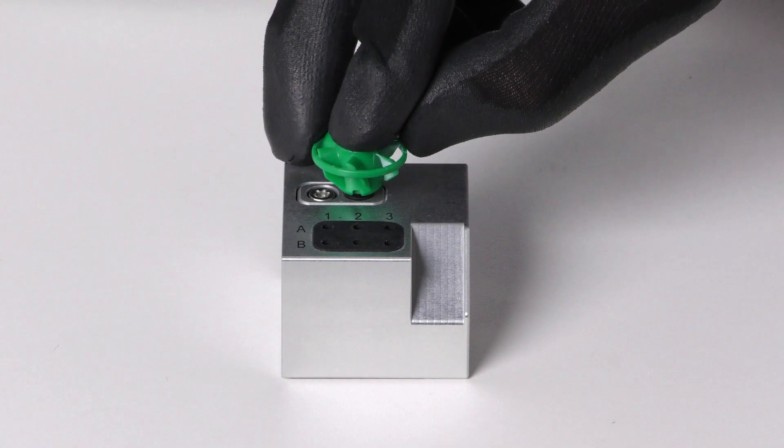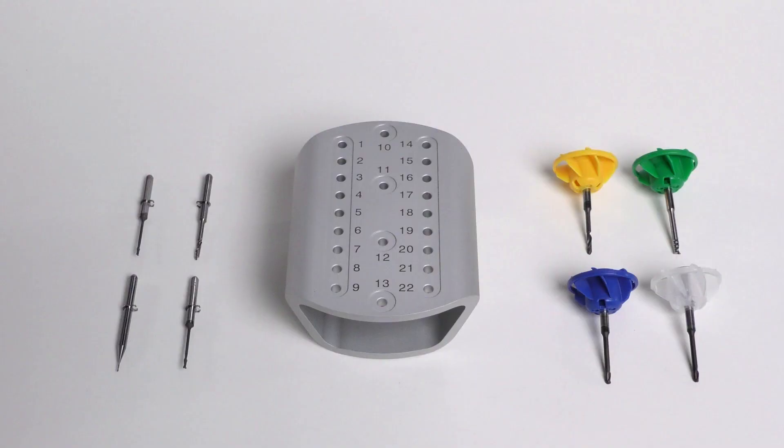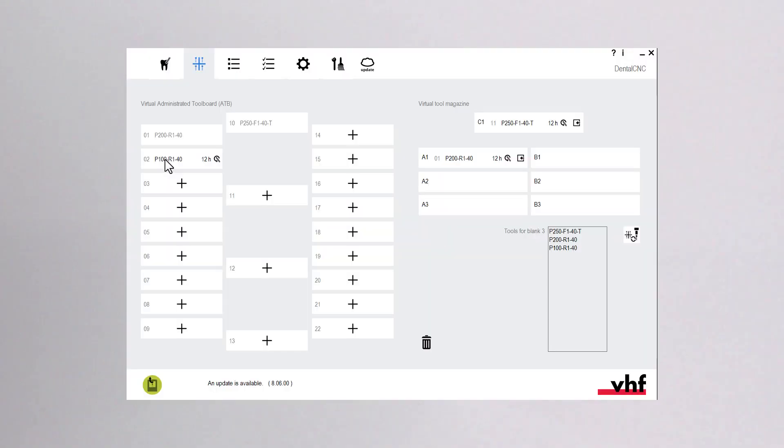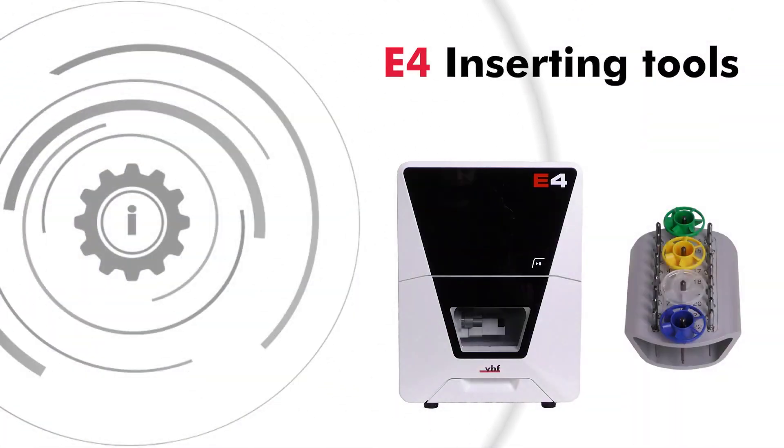In this video, we will show you how to insert dental tools into the tool magazine of the E4. We will also show you how to conveniently store tools in the administrative tool board that is provided with the optional dry machining set.